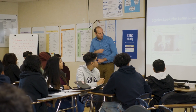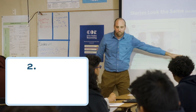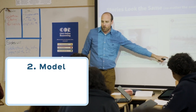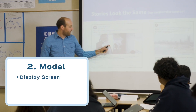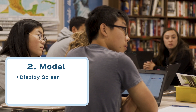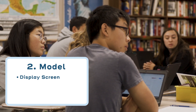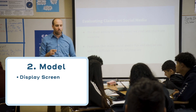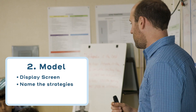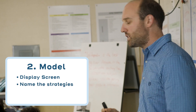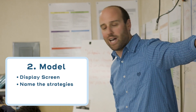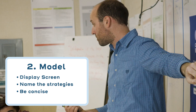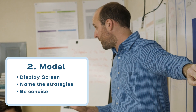The second step is to actually walk students through your thinking process. Display your screen so all students can see it. As you evaluate the source, explain your thinking for students and name the specific strategies as you use them. Be concise — modeling can be done in just a few minutes.